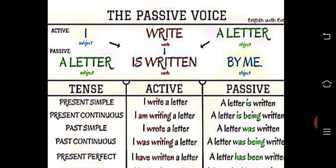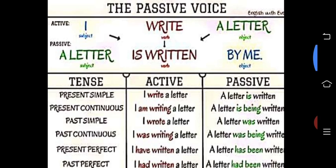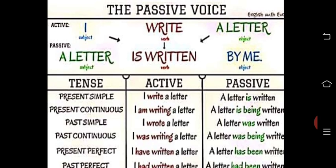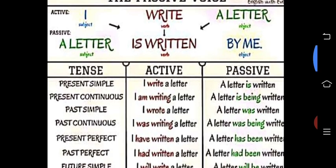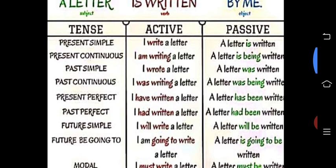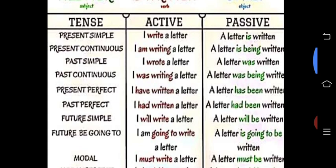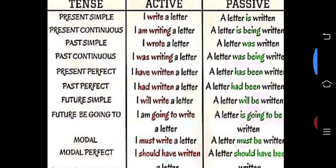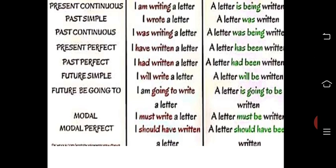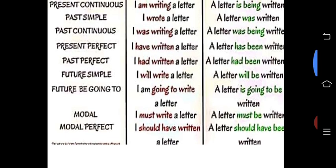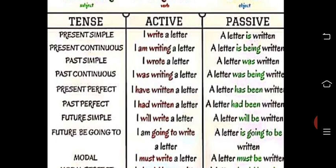Totally we have 12 tenses, but in active to passive we use only 8. What are they? Simple present, present continuous, simple past, past continuous, present perfect, past perfect, future simple, and future going-to plus modal verbs. For example: 'I write a letter' → 'A letter is written by me.' For continuous (ing form), we use 'being': 'I am writing' → 'A letter is being written.' For simple past: 'I wrote a letter' → 'A letter was written.'